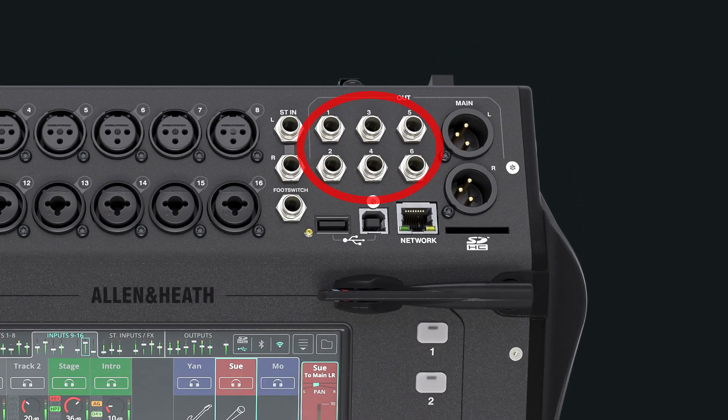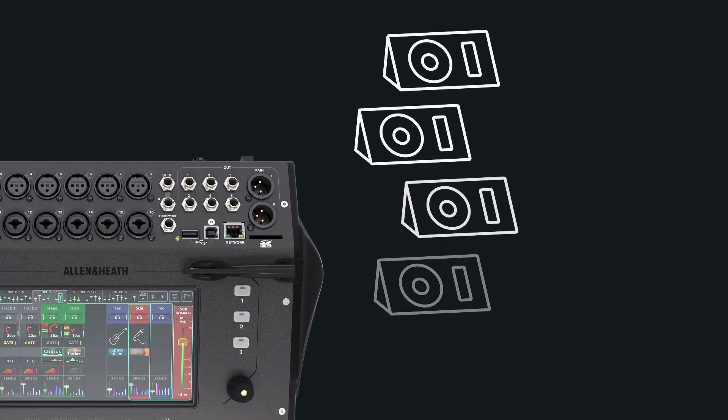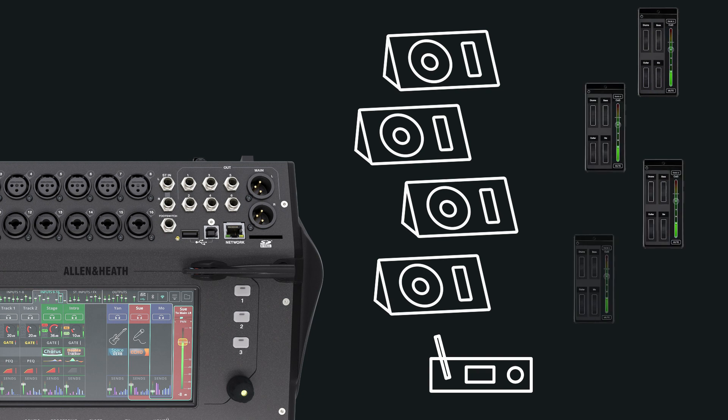The CQ has six independent outputs which can be used to feed stage wedges or IEM systems for monitoring. The free CQ4U app, available for iOS and Android, allows performers to easily control the send levels to only their monitor, without risk of messing up someone else's mix.